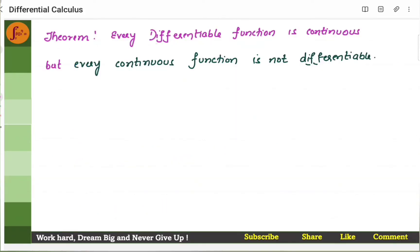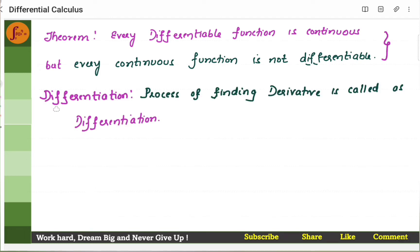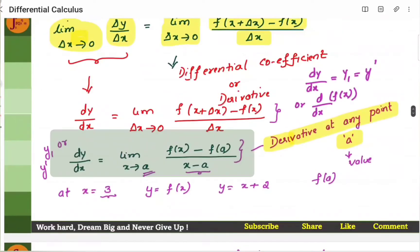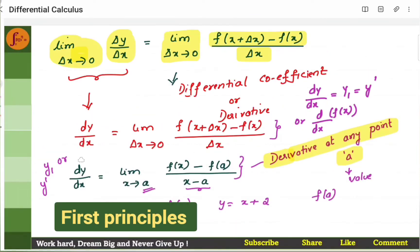Now, there is a theorem that states that every differentiable function is continuous, but every continuous function is not differentiable. We will not get into the proof of this — we will go through it in another video. Also, differentiation: the process of finding a derivative is called differentiation. This process of finding dy by dx, which is limit x tending to a of f of x minus f of a divided by x minus a, is called differentiation using first principles.